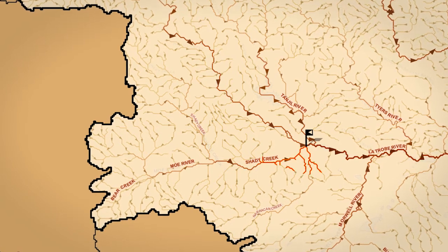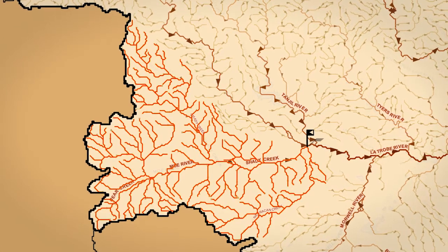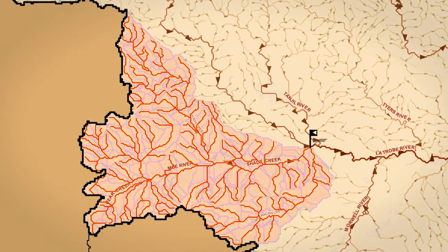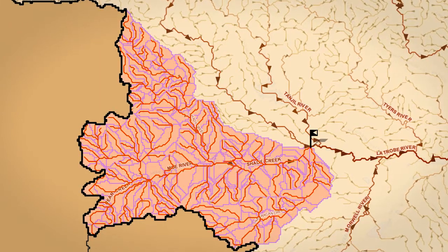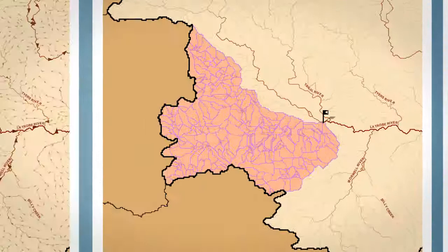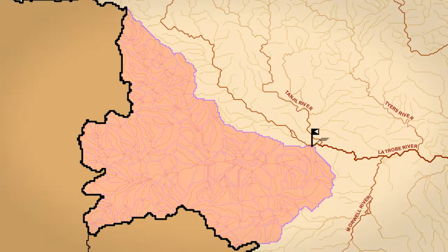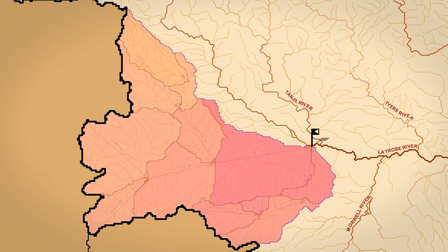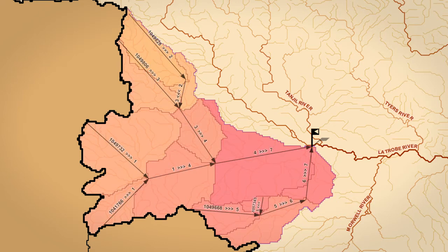You can trace these connected and directed stream networks and link them to surface catchments. This lets you identify the upstream contributing catchment area for a selected stream segment. Hydrologists use this to define networks and related catchments, and to inform environmental management and reporting.